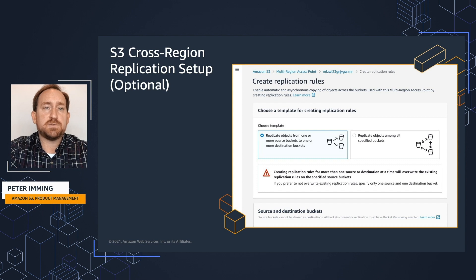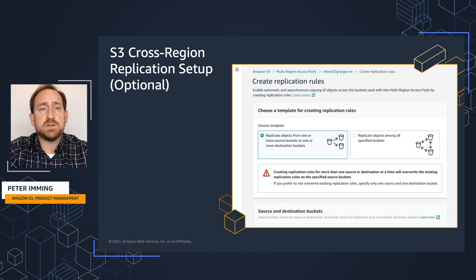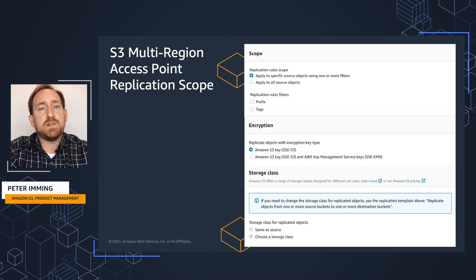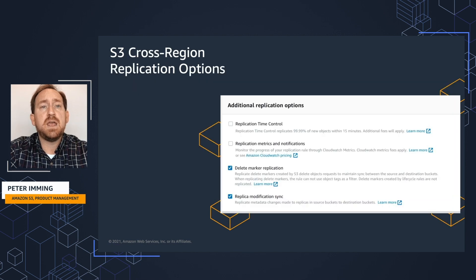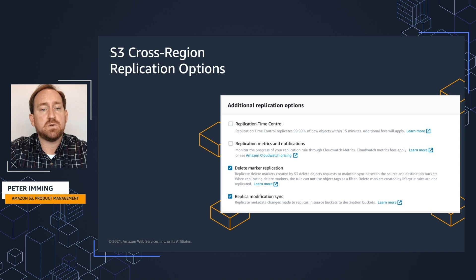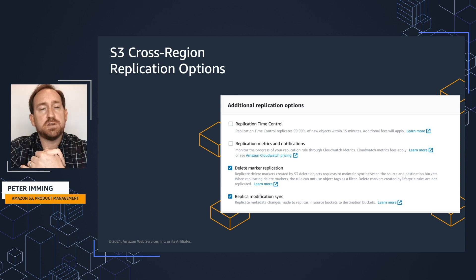You'll then have the ability to choose what replication options you'd like to enable — this is completely optional. You can use existing replication, or centrally configure the replication rules for all of the source and destination buckets. The replication scope follows the same rules as cross-region replication today: replicate all data, some data, or data filtered by tag. Options include replicating encrypted objects, replicating to a different storage class to lower storage costs, replication time control for an SLA-based standard of 99.99% of objects replicated in 15 minutes or less, replication metrics to monitor progress, bi-directional sync, and the option to replicate deletion markers.